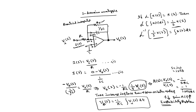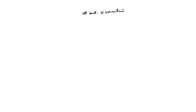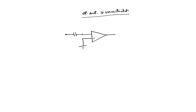We can also perform differentiation using an op-amp — the op-amp differentiator. We can analyze it in the time domain as well as S-domain. The circuit diagram of the differentiator is obtained by just exchanging R and C from the integrator: now we connect C at the input and R in the feedback path.